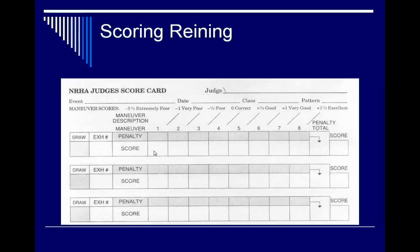Maneuver scores range from zero for an average performance, to minus one-half, minus one, or minus one and a half for maneuvers that are less than average. For positive maneuvers that are above average, they range from plus one-half, plus one, and plus one and a half. Maneuver scores are somewhat subjective, but every time a horse performs a maneuver, a score is recorded in each box.